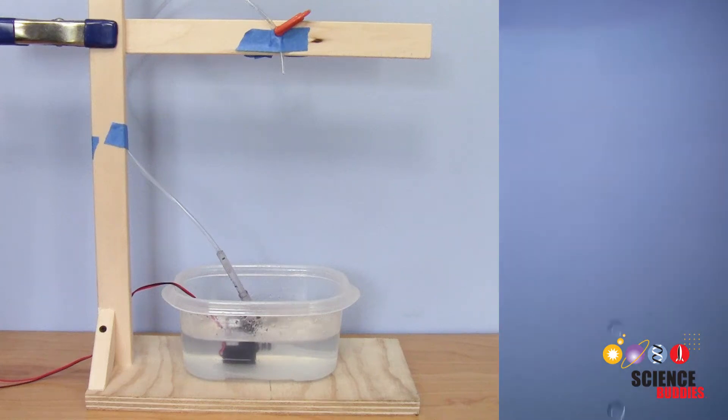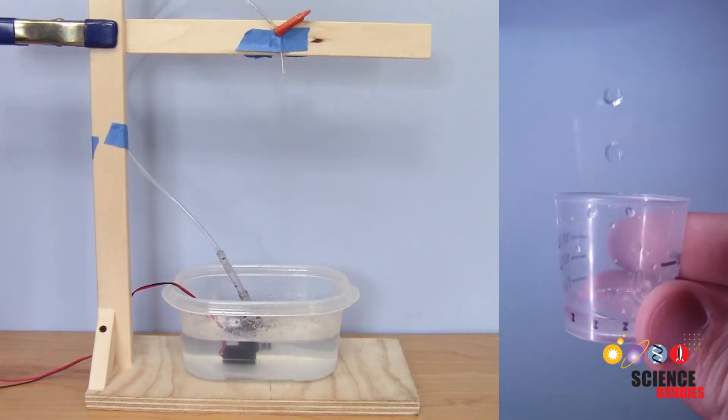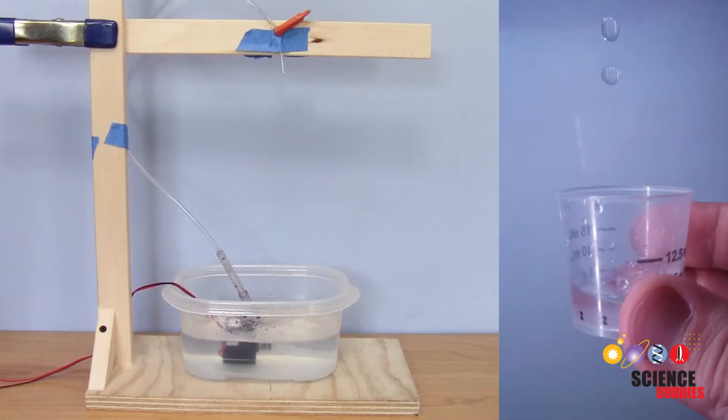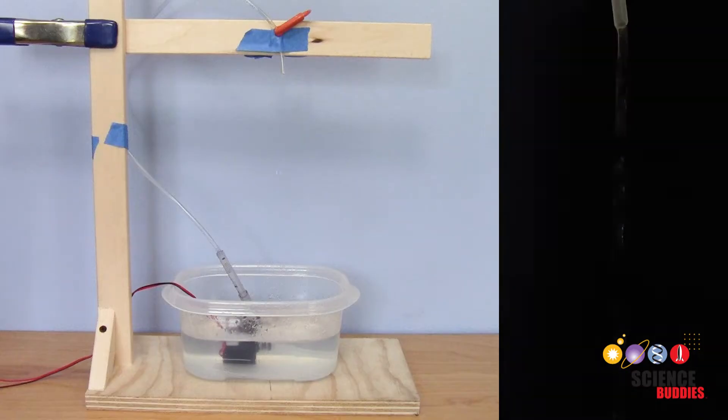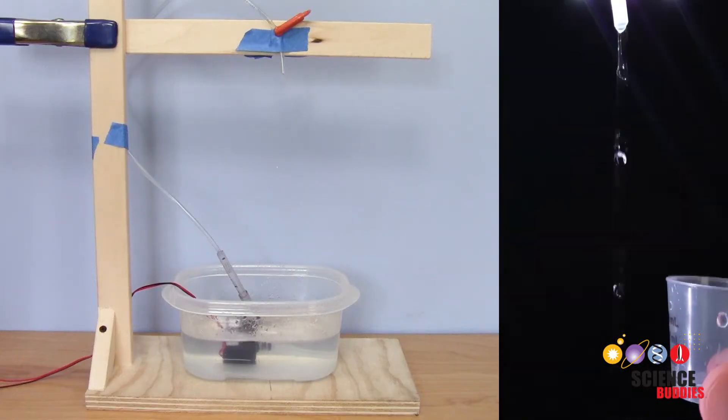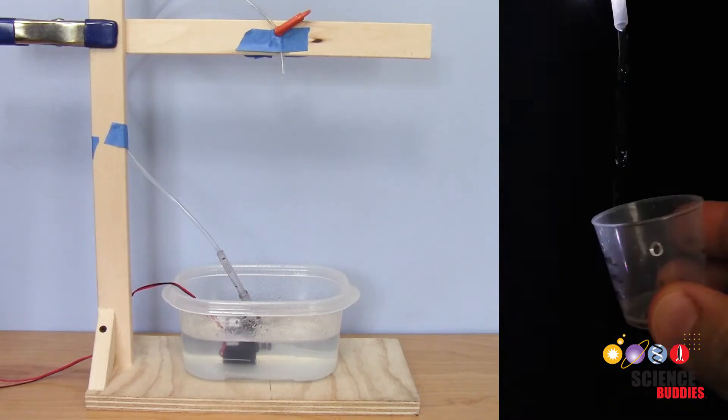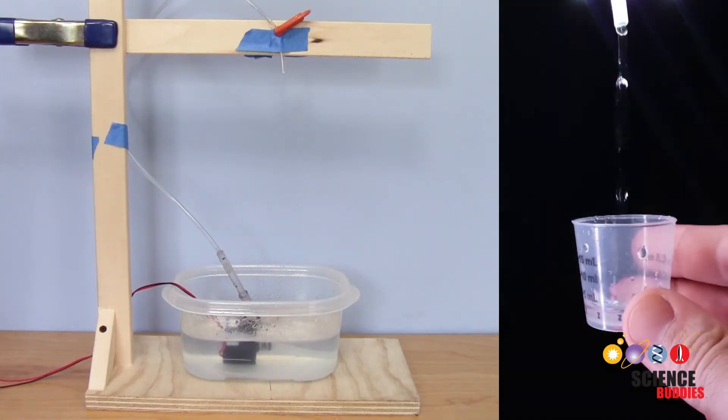Hi, this is Dr. Ben Finio with Science Buddies, and in this video I'll show you how to build your own levitating water fountain. This is a fountain that, as you can see in the inset video, can make it look like water drops are falling up when illuminated with a strobe light. To learn more about the illusion and how it works, check out the previous video linked in the description of this one. In this video, we'll focus on how to build your own.